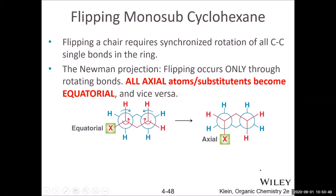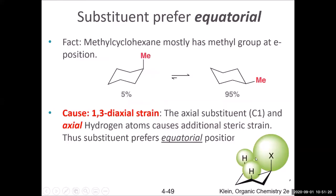As the substituent gets larger — going from chlorine to bigger and bigger groups — the preferences are different. With a chlorine (single atom), the repulsive force is only about 2 kJ/mol, giving a slight preference (~2:1) for the equatorial position. The energy difference increases very dramatically with larger groups.